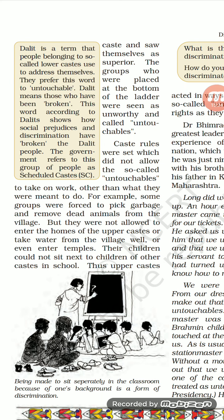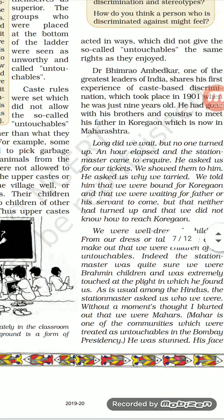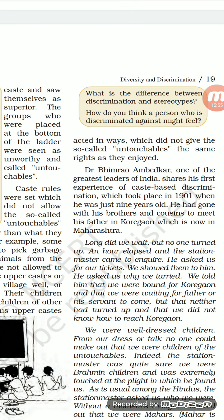Dalit people were not allowed to enter the homes of the upper class. They were not allowed to take water from the same well, not allowed to enter temples to worship, and their children were not allowed to sit next to upper caste children in school — which is very painful. Earlier, Brahmin people used to support this kind of scenario. But Dr. Bhimrao Ambedkar, one of the greatest leaders of India, changed this. Research task: find out why Dr. Bhimrao Ambedkar is famous and what he did for India.